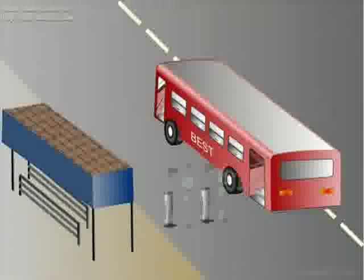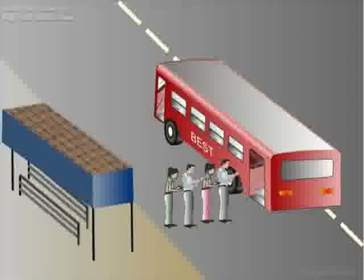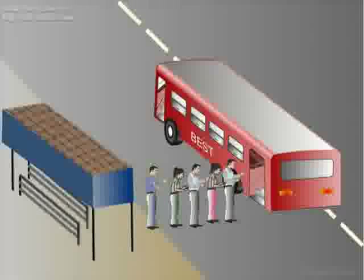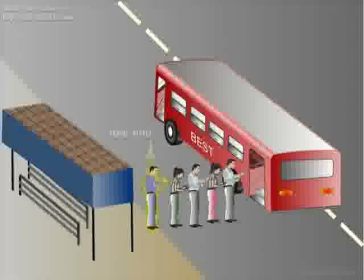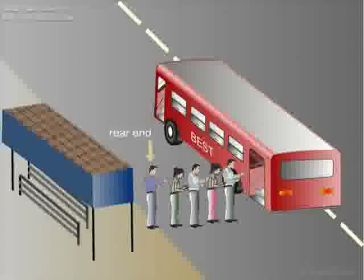A real-life example of a queue is a queue of people waiting for a city bus at the bus stop. When a new person comes and joins at the end of the queue, this is the rear end. When the bus arrives, the first person from the queue enters the bus first — this is the front end.